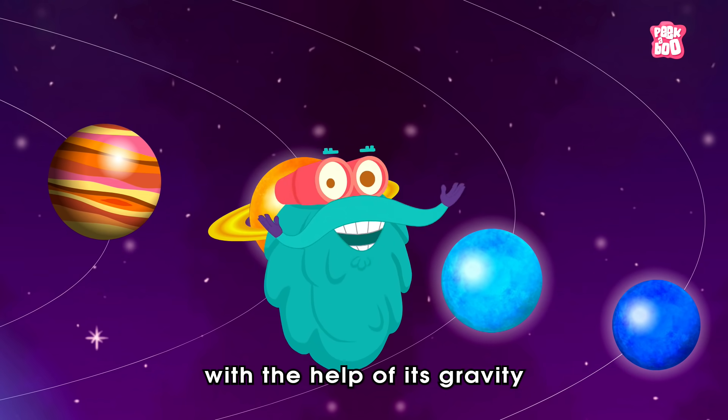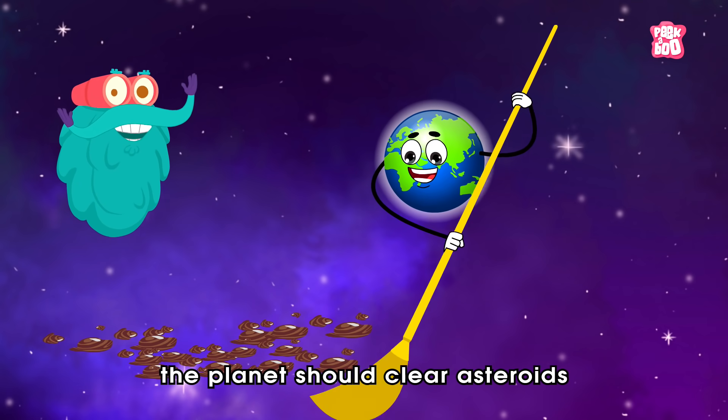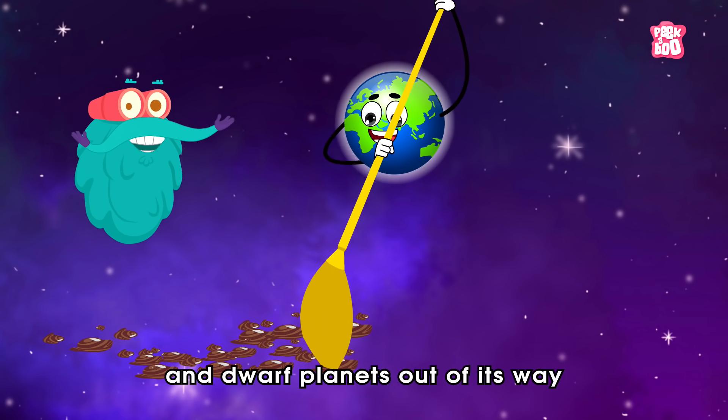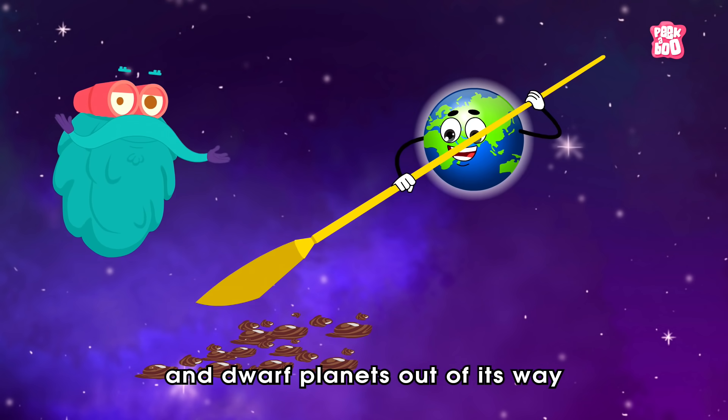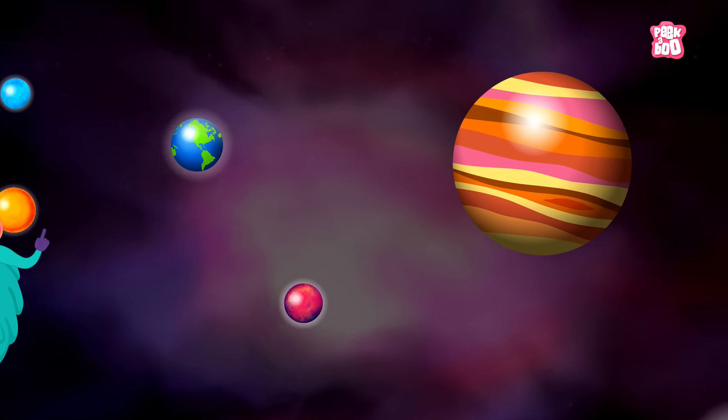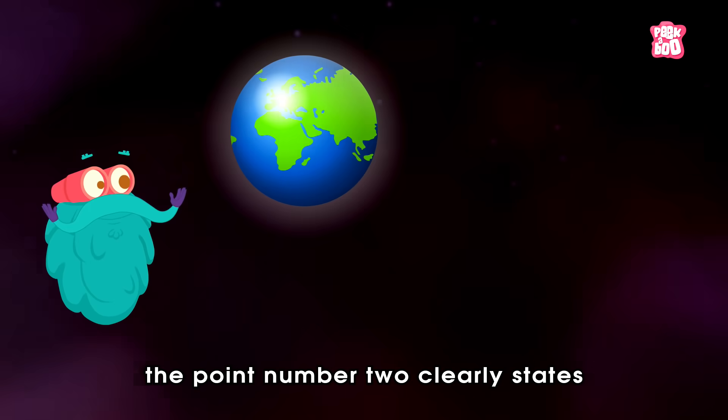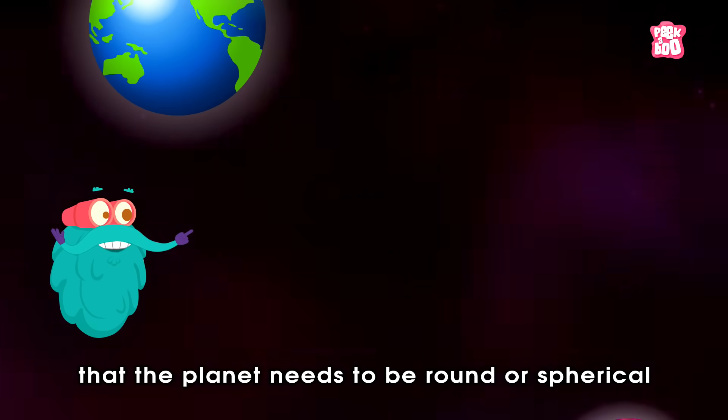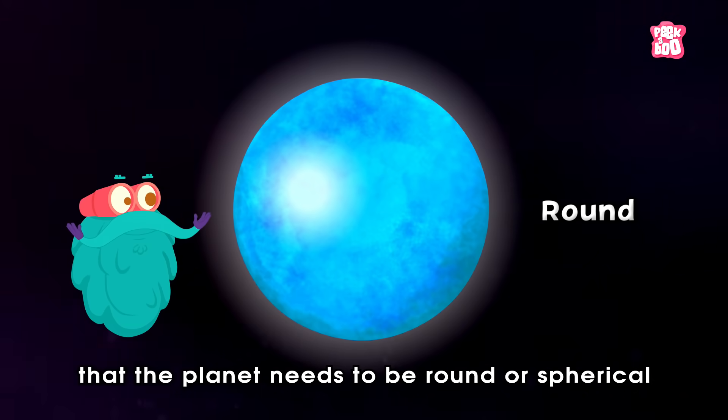Meaning, with the help of its gravity, the planet should clear asteroids and dwarf planets out of its way. So, point number two clearly states that the planet needs to be round or spherical.